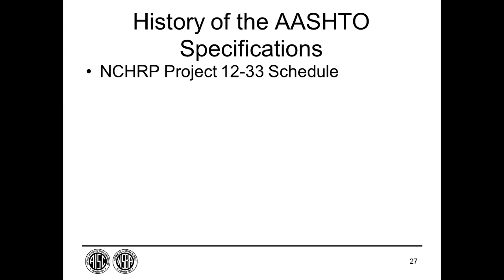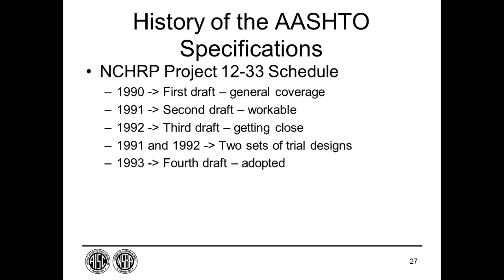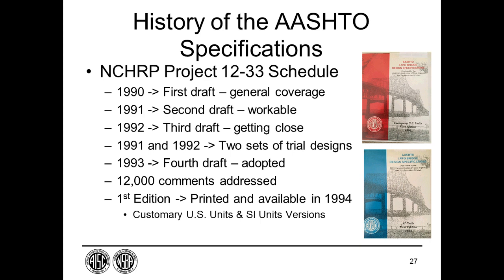A code coordinating committee was assembled along with an editorial team, and a task group was assembled for each section of the specification and for the code calibration, with a total of 56 task group members. The first draft of the specification was completed in 1990. More advanced second and third drafts were completed in 1991 and 1992. Two complete sets of trial designs to exercise the new specification provisions were completed and discussed in 1991 and 1992. Finally, the fourth draft completed in 1993 was adopted by AASHTO, reviewed by hundreds with over 12,000 comments received.